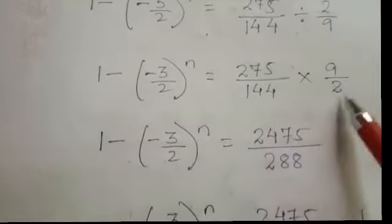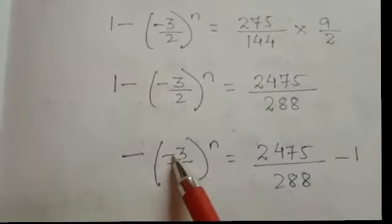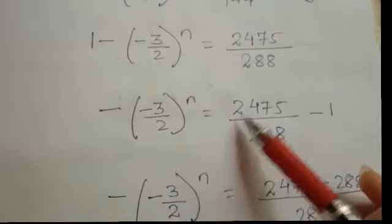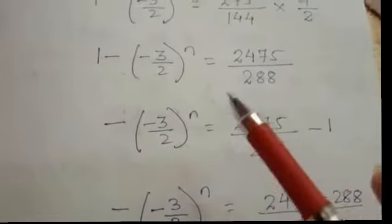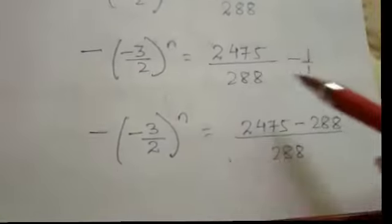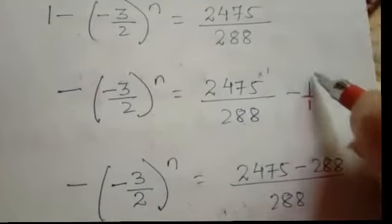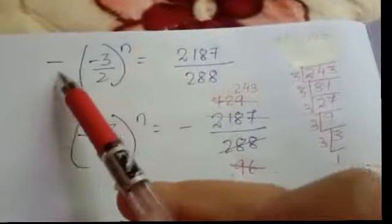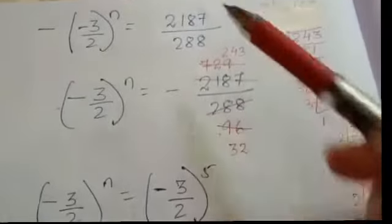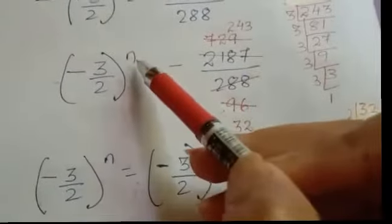144 into 2 is 288. We take 1 to the right-hand side: minus (minus 3 by 2) to the power n equals 2475 by 288 minus 1. We take LCM of 288 and 1, which is 288: 288 ones are 288, giving 288 minus 288 equals... then we write the minus on the right-hand side, and we cancel to get 243 by 32.